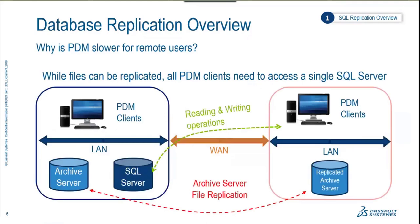Why is it slower? Generally speaking, it's because of the architecture. Those remote users are coming all the way back to a central database server running on the Microsoft SQL platform. PDM clients over the WAN are coming back to the central site to access that SQL server. Even if they have a replicated archive server, they access files locally — but when they do a search, a where-used, contains, or a checkout, any read or write operation sends a lot of traffic back and forth to that central SQL server.